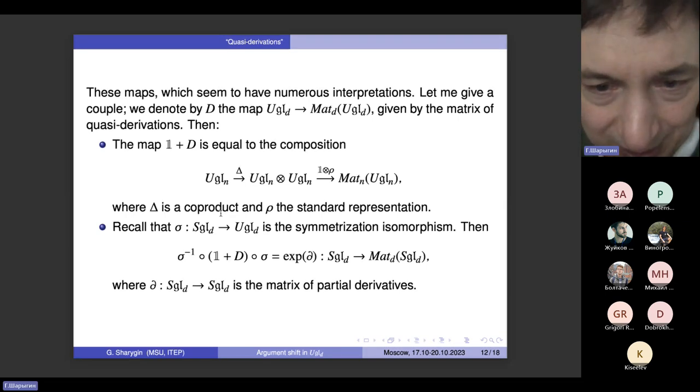So actually, these maps can be obtained in a different way. Here are two alternative constructions. For instance, the first construction makes advantage of co-multiplication on UGLN or UGLD. This file is a compilation of two files, so sometimes I speak about GLD, sometimes about GLN, but I hope you will forgive me this. You take advantage of the co-multiplication of UGLN. You co-multiply UGLN.